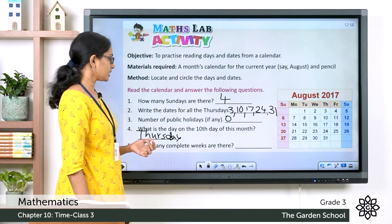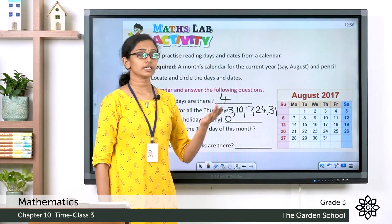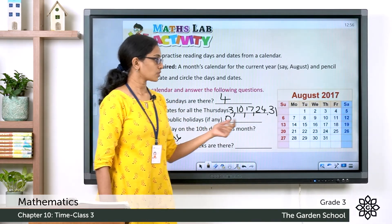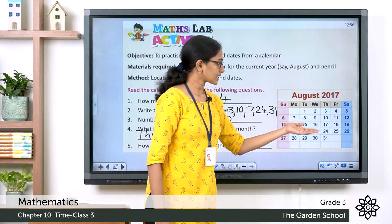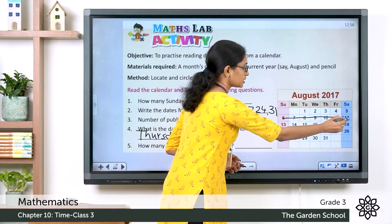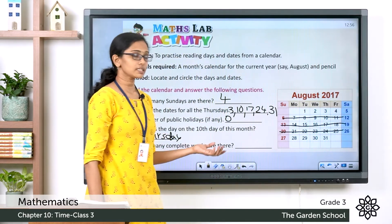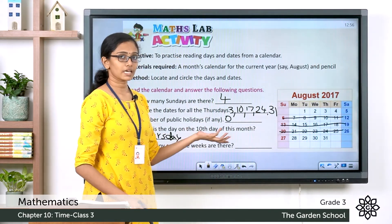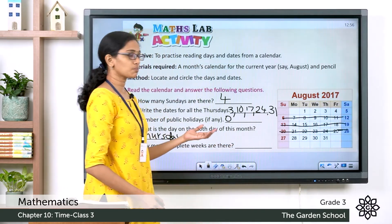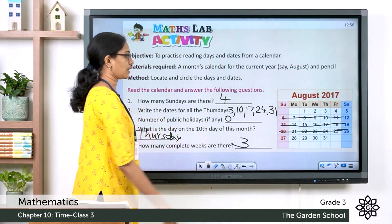Now, how many complete weeks are there? A complete week has seven days. Looking at this calendar, there are three weeks that have a complete seven days, so the answer is three complete weeks.